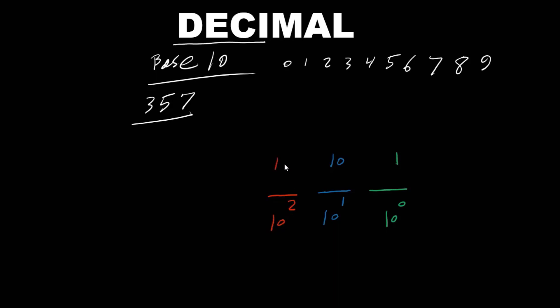If we move one more place to the left, this is place value position 3. 10 to the power of 3 is 1000, so this is the thousands place.